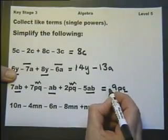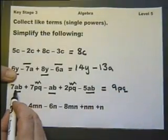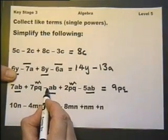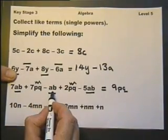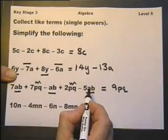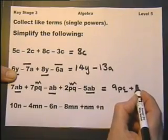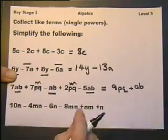We've got plus 7AB there. Take away 1AB, which will give us 6AB. And then take away 5AB, which will leave us with plus 1AB. It doesn't matter if you put the 1 in or not.